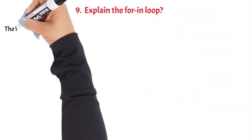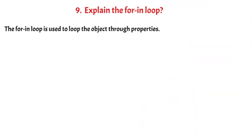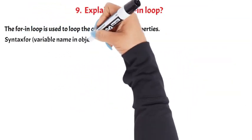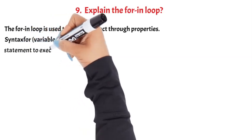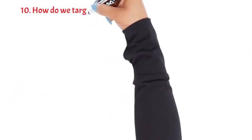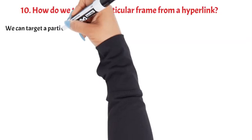Explain the for...in loop. The for...in loop is used to loop through object properties. Syntax: for (variable name in object) { statement to execute; } Question 10.